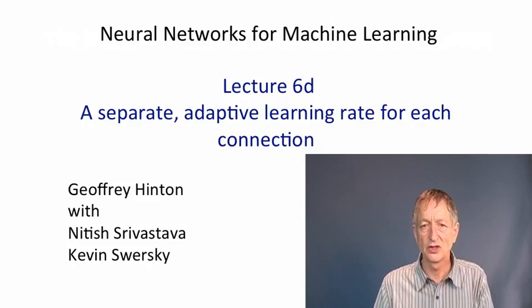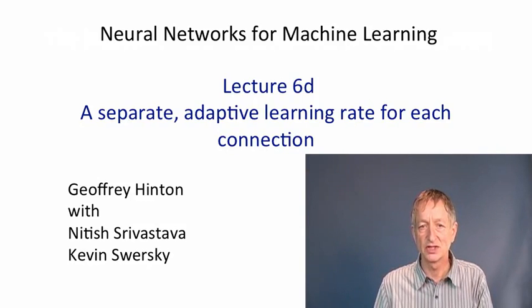In this video, we're going to look at a method that was developed in the late 1980s by Robbie Jacobs and then improved by a number of other people. The idea is that each connection in the neural net should have its own adaptive learning rate, which we set empirically by observing what happens to the weight on that connection when we update it. If the weight keeps reversing its gradient, we turn down the learning rate, and if the gradient stays consistent, we turn up the learning rate.